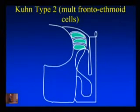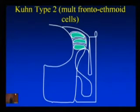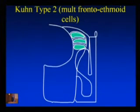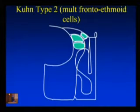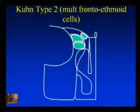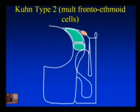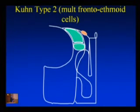A Kuhn type 2 configuration has multiple cells — two, three, or more — sitting with the agonese cell in various configurations, pushing the drainage pathway of the frontal sinus in various directions. It's important to do the three-dimensional reconstruction and identify that drainage pathway so we can see that when the cell reaches the skull base, we may need to remove the roof of that cell to properly expose the frontal ostium.